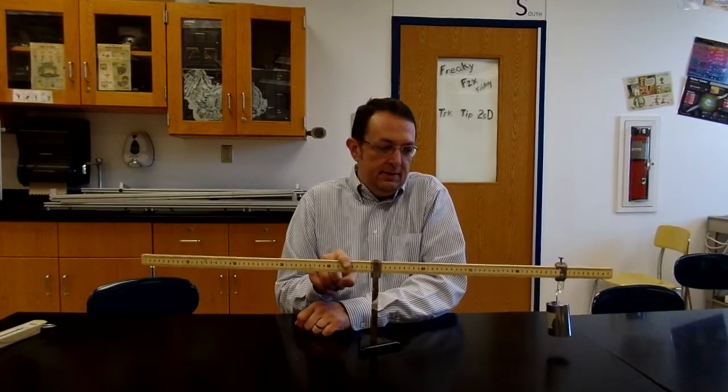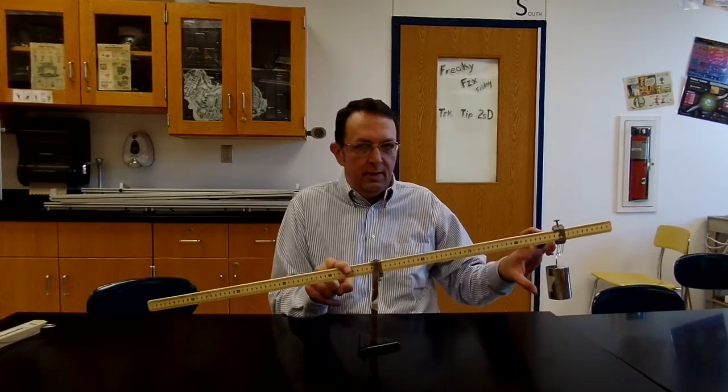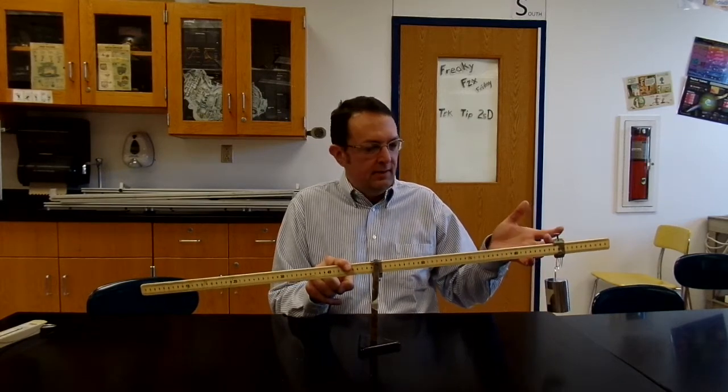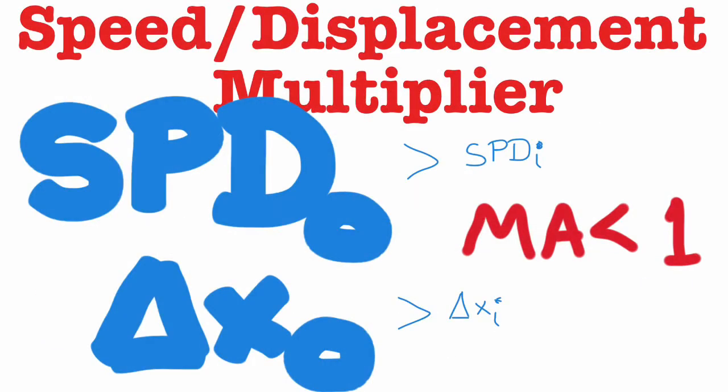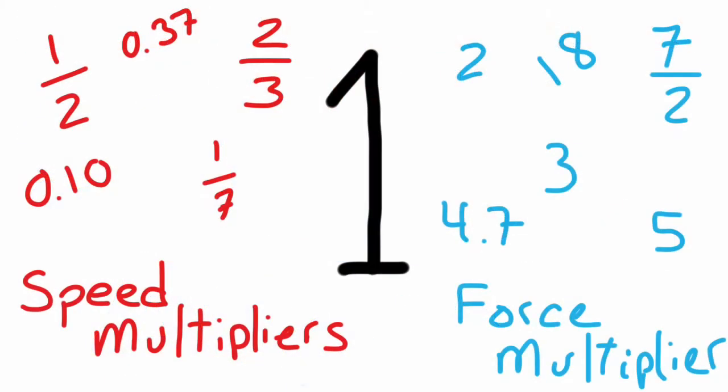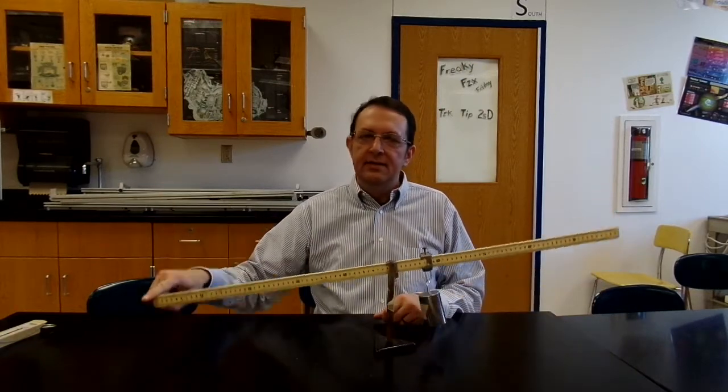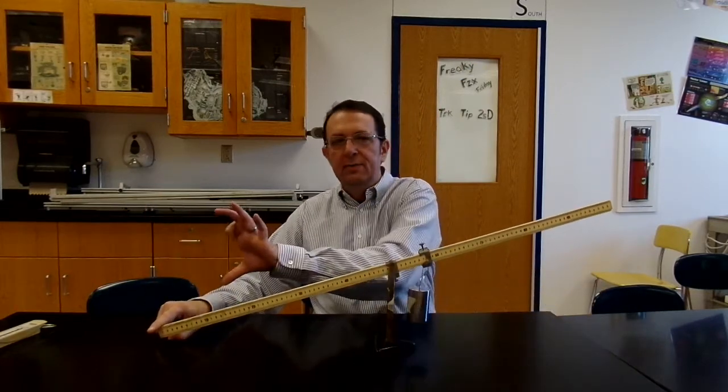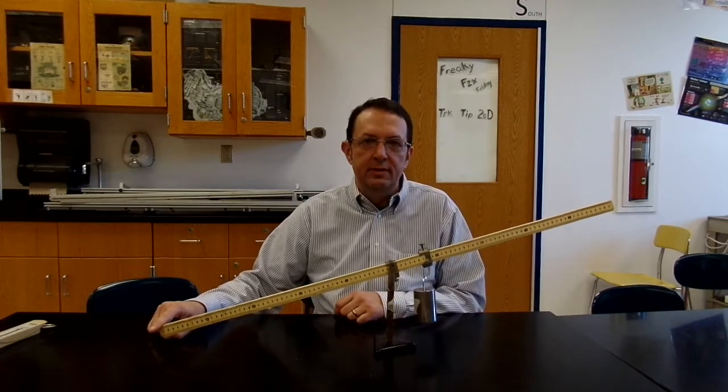But if you do this, that, that is a mechanical advantage that is less than one, because you see that that moves a whole lot more. Displacement speed multiplier, like one-fourth. And if you do something like this, this, easy to do, that is a force multiplier, and you can tell because it is necessarily a displacement divider, large input displacement, small output displacement.